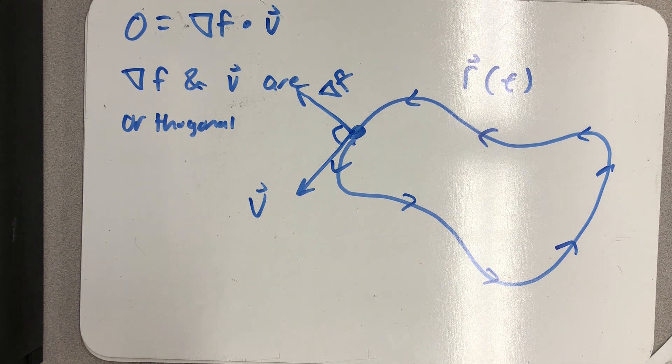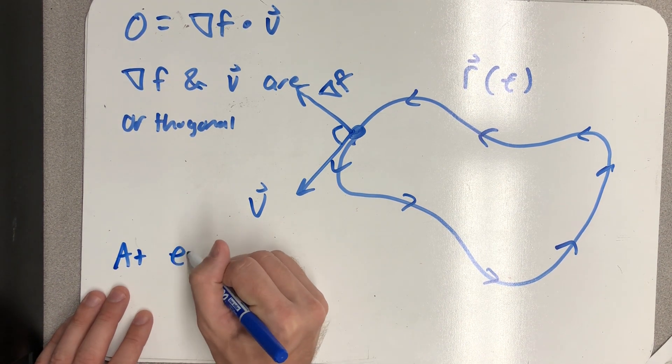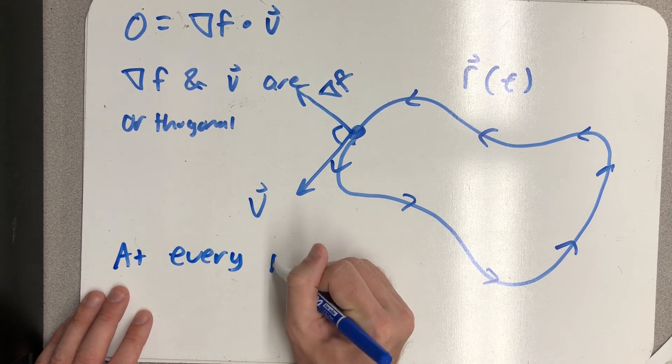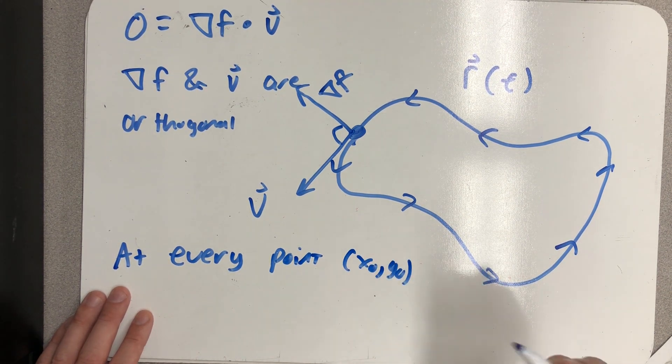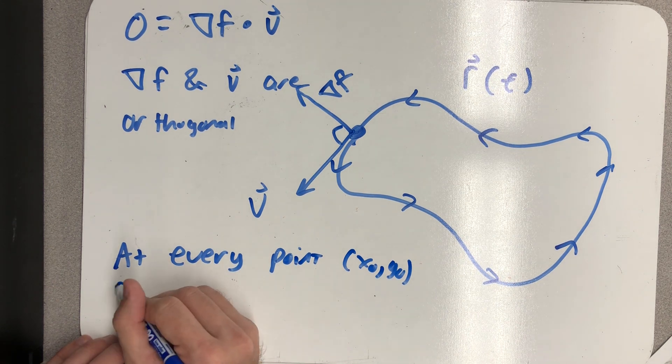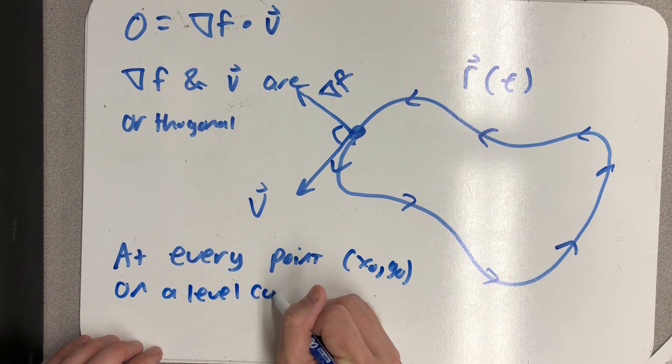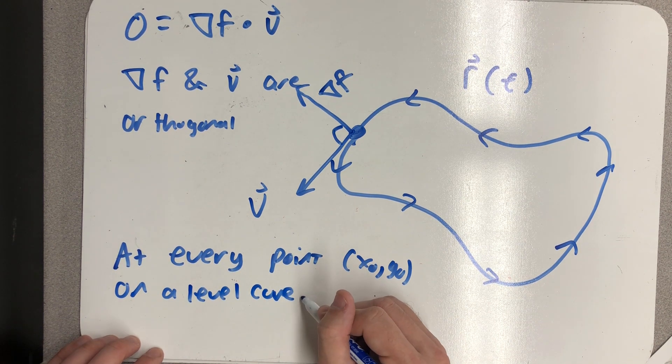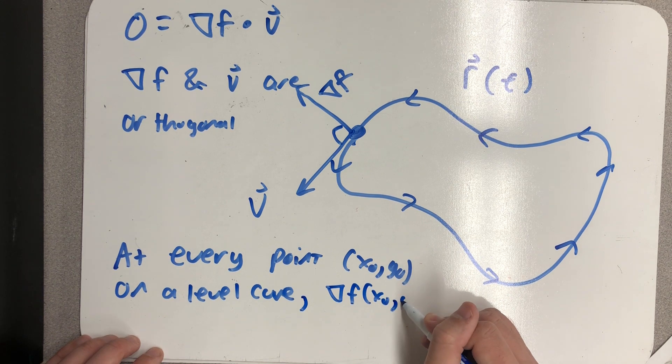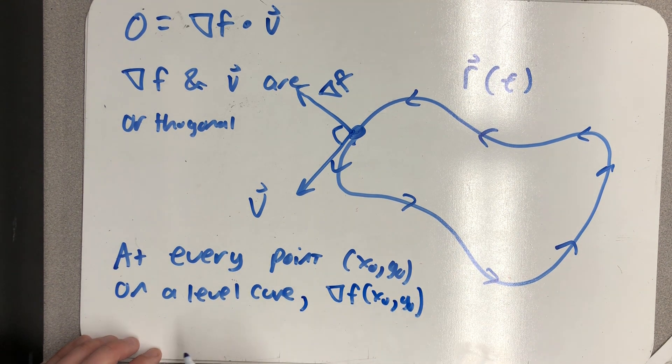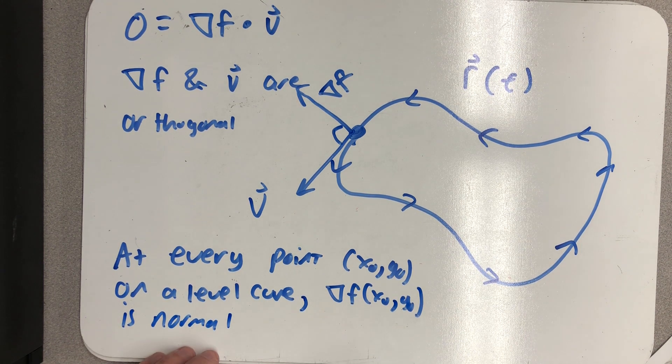So the conclusion we can draw from these observations: at every point x naught y naught on a level curve, del f evaluated at that point is normal - perpendicular - to the level curve.